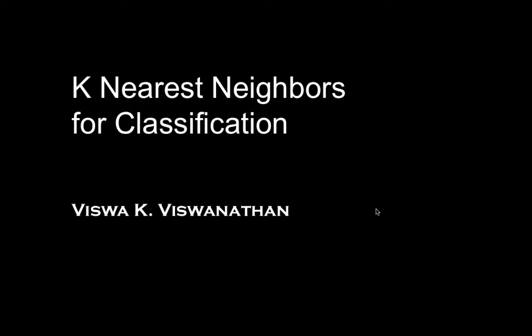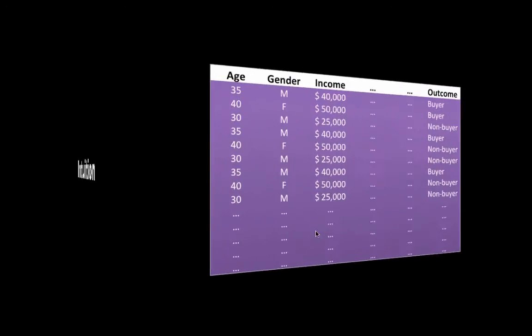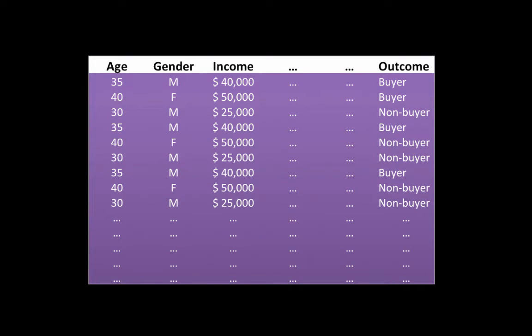This is a technique to understand. Let's get the intuition behind the K-nearest neighbors technique. Let us take a concrete example. Let's say we have historical information about some people, lots of people. We're just showing some data here. In fact, we're not even showing all the attributes. So for every person, we have information on several attributes, and we also have our target attribute of the outcome, whether that person actually bought the product or did not buy the product.